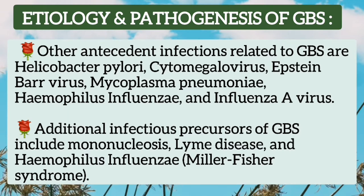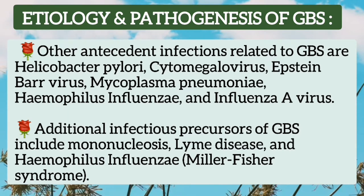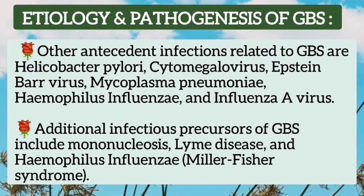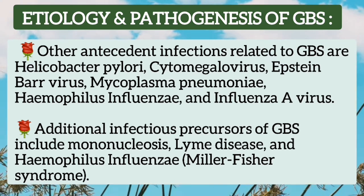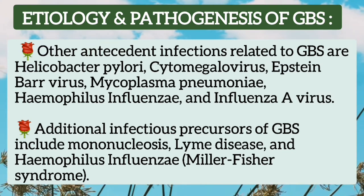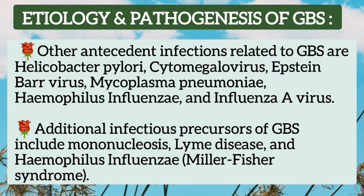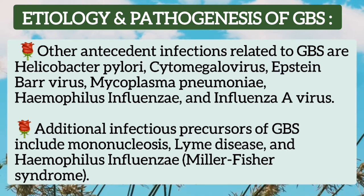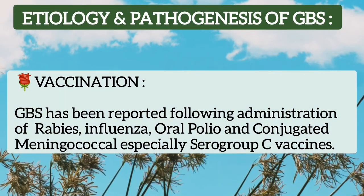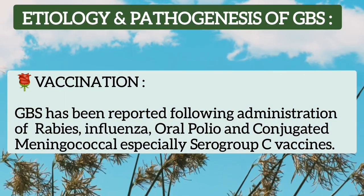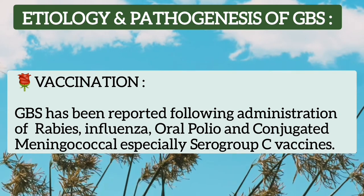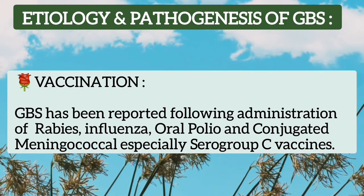Other antecedent infections related to GBS include Helicobacter pylori, cytomegalovirus, Epstein-Barr virus, Mycoplasma pneumoniae, and influenza A virus. Additional infectious processes include mononucleosis, Lyme disease, and Haemophilus influenzae, especially in Miller-Fisher syndrome. GBS has also been reported following administration of certain vaccines, including rabies, influenza, oral polio, and conjugated meningococcal, especially serogroup C vaccine.